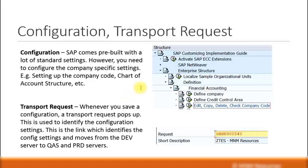Let's look at configuration. This is the main SAP menu path for your configurations. SAP comes pre-built with a lot of standard settings, but you need to specifically configure it based on your company's needs. For example, you have to set up your company in SAP with the company code and your company details, your bank account, your chart of accounts, your general structure, all your assets, accounts payables — all these settings have to be set up in SAP. And this is called the configuration.